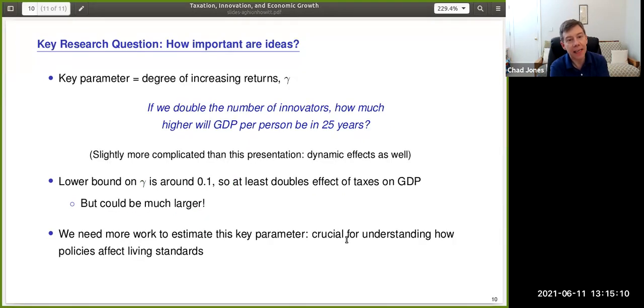Just to end, this is my final slide. I think the key research question is how important are our ideas? How big is this degree of increasing returns to scale gamma? Or one way I like to think about it, if we double the number of innovators, how much higher will GDP per person be in 25 years' time? I would say a lower bound on gamma, something around 0.1. So at the very least, this suggests that thinking about ideas doubles the effect of taxes on GDP. But as I mentioned before, simple calibrations would give you one quarter or maybe a half, and it could be even much larger.